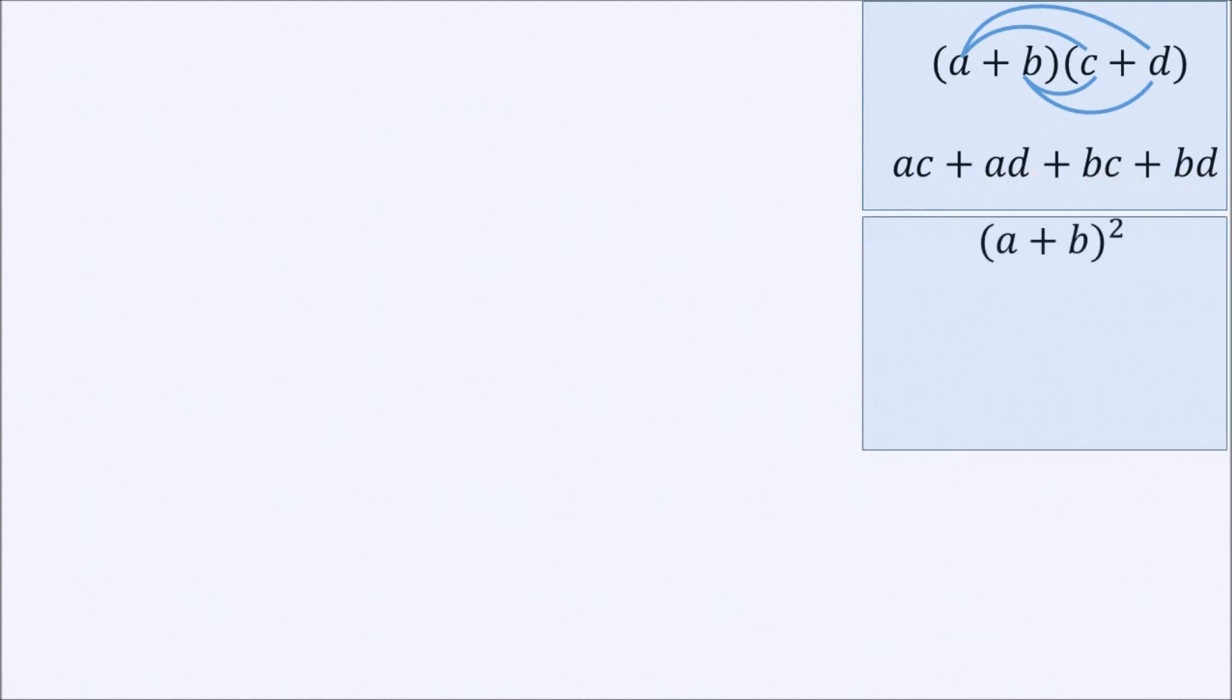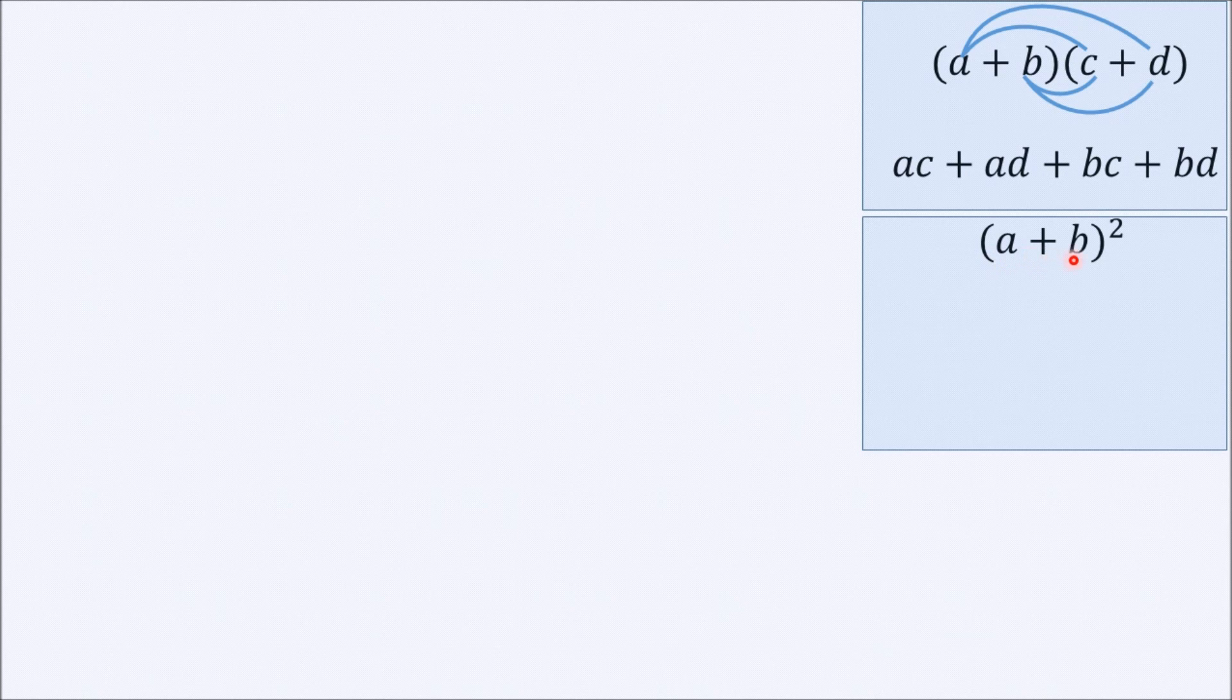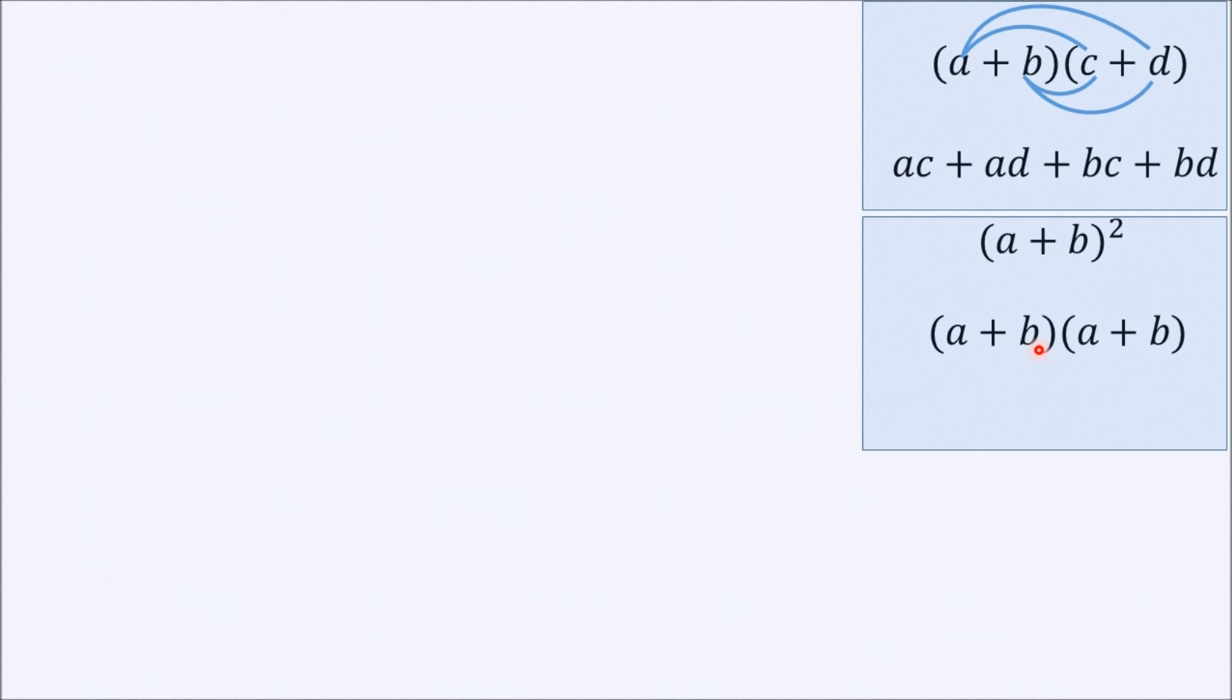There is a special case here. If we have A plus B all squared, which means that we multiply A plus B by A plus B. So if we do the same thing and multiply the first element in the first bracket by the two elements of the second bracket,